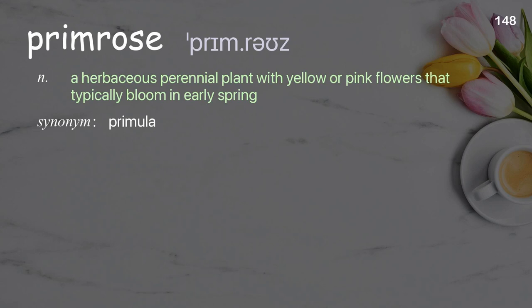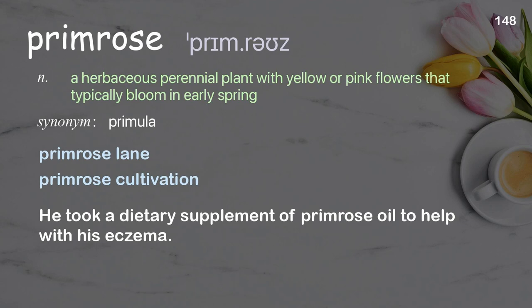Primrose: A herbaceous perennial plant with yellow or pink flowers that typically bloom in early spring. Examples: primrose lane, primrose cultivation. He took a dietary supplement of primrose oil to help with his eczema.